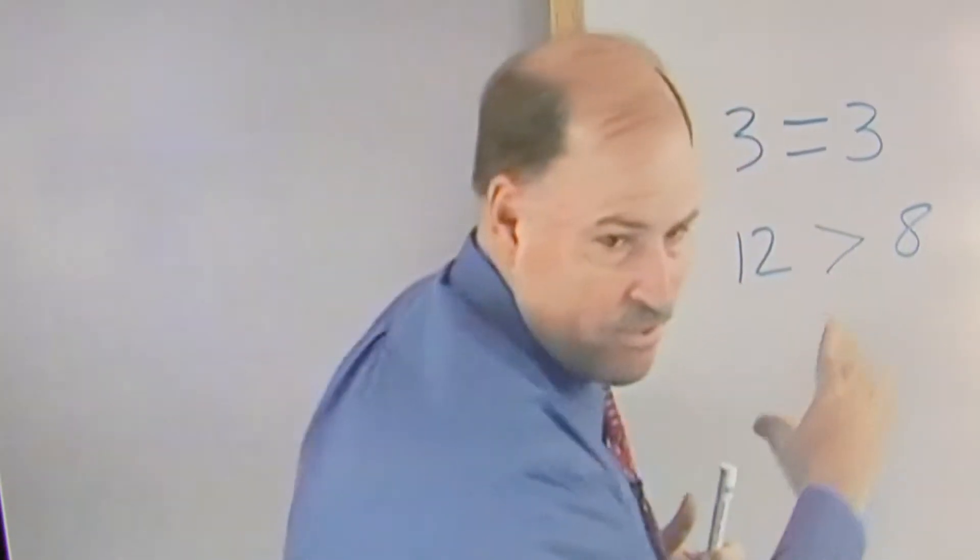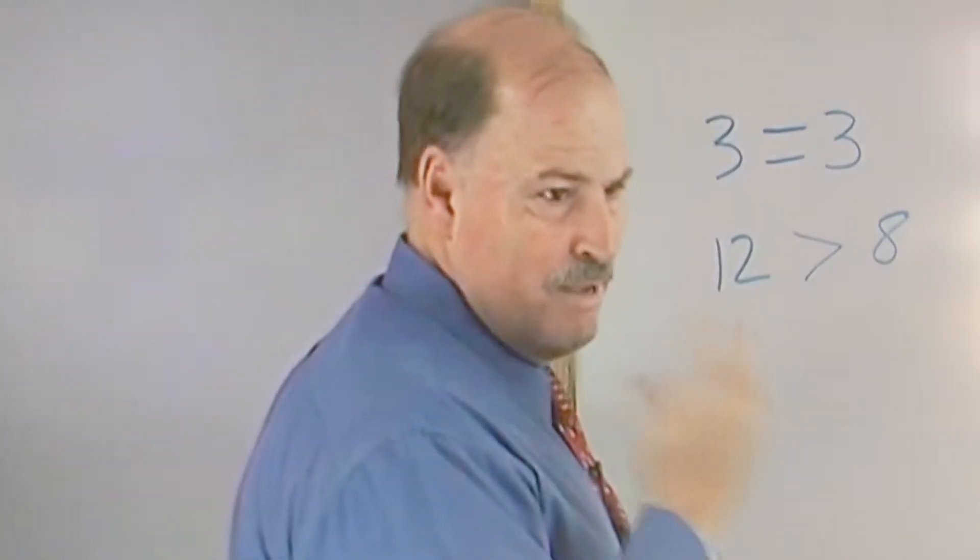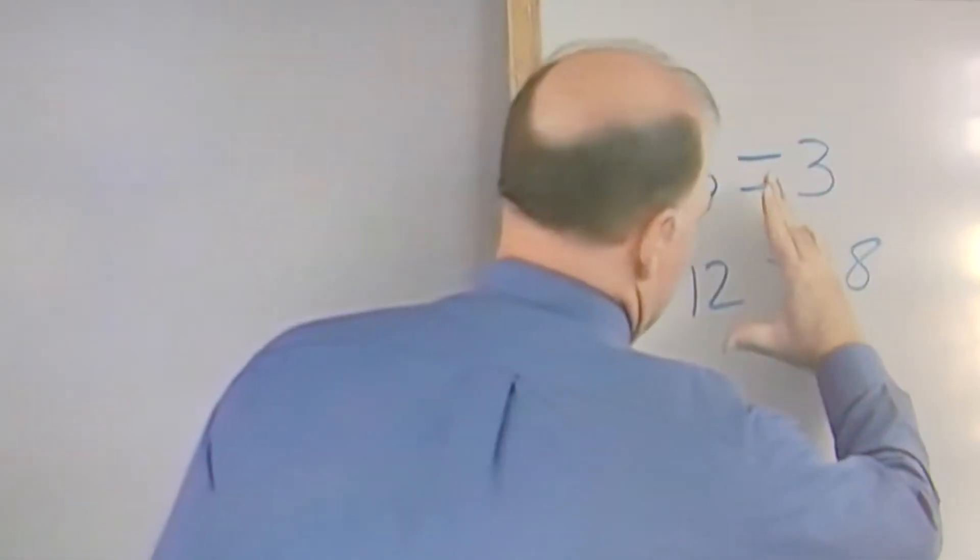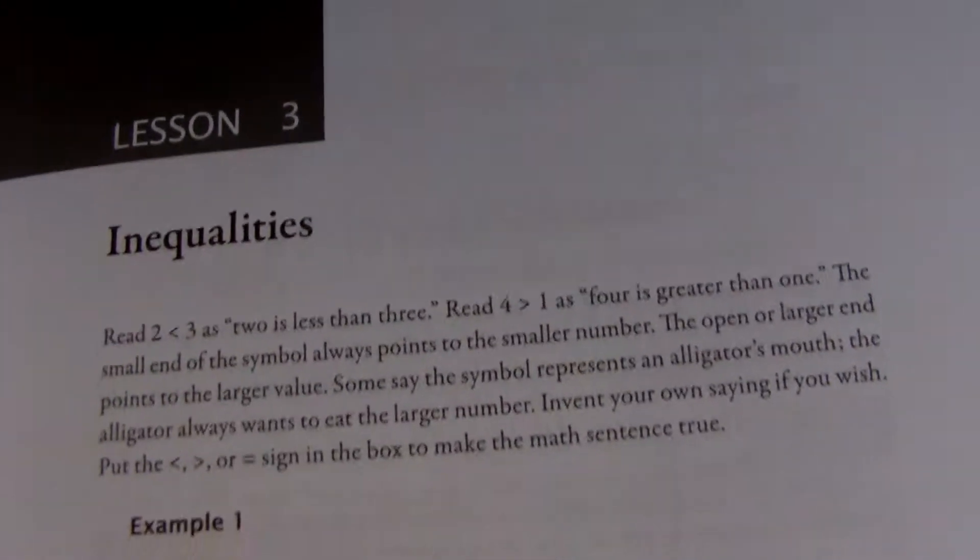This is an alligator mouth, and the alligator wants the biggest number to eat, and so he's always pointed to the biggest number. We can either put in an equal sign, or a greater than sign, or a less than sign. So which symbol goes in there?